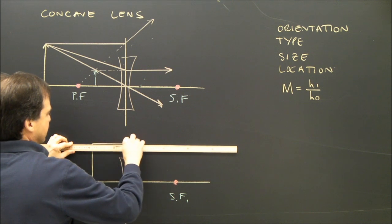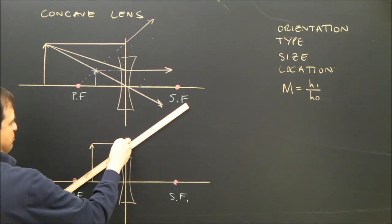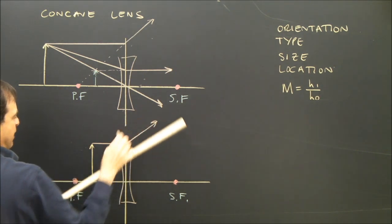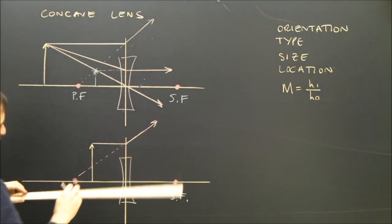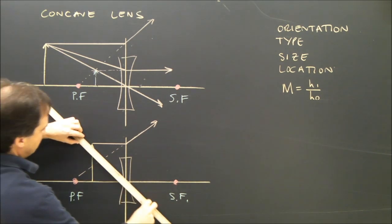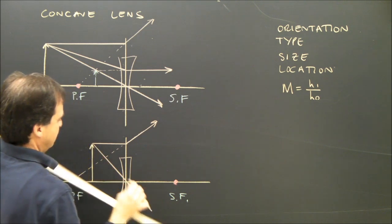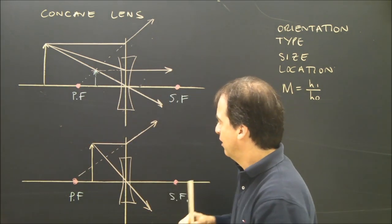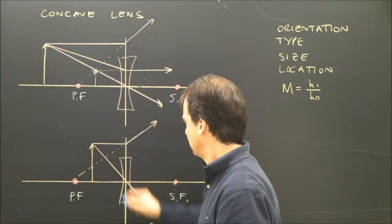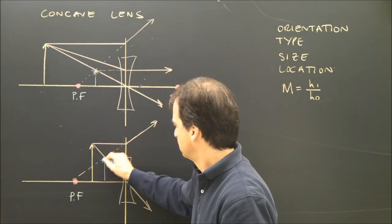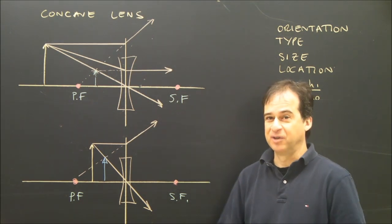A parallel ray bends through the primary focus. So that's the one that I bent so I can trace back through the primary focus. A center ray goes directly through the center, like that. So these two rays meet right here. This is my image. Okay, I had to fix something on this.